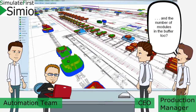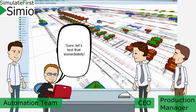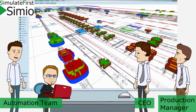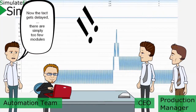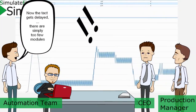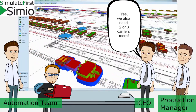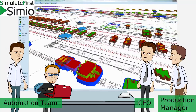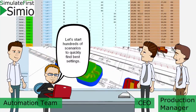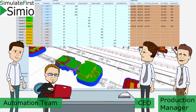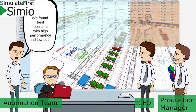And the number of modules in the buffer? Sure, let's test that immediately. Now the takt gets delayed — there are simply too few modules. Yes, we also need two or three more carriers. Let's start hundreds of scenarios to quickly find the best settings. We found the best scenario with high performance and low cost.